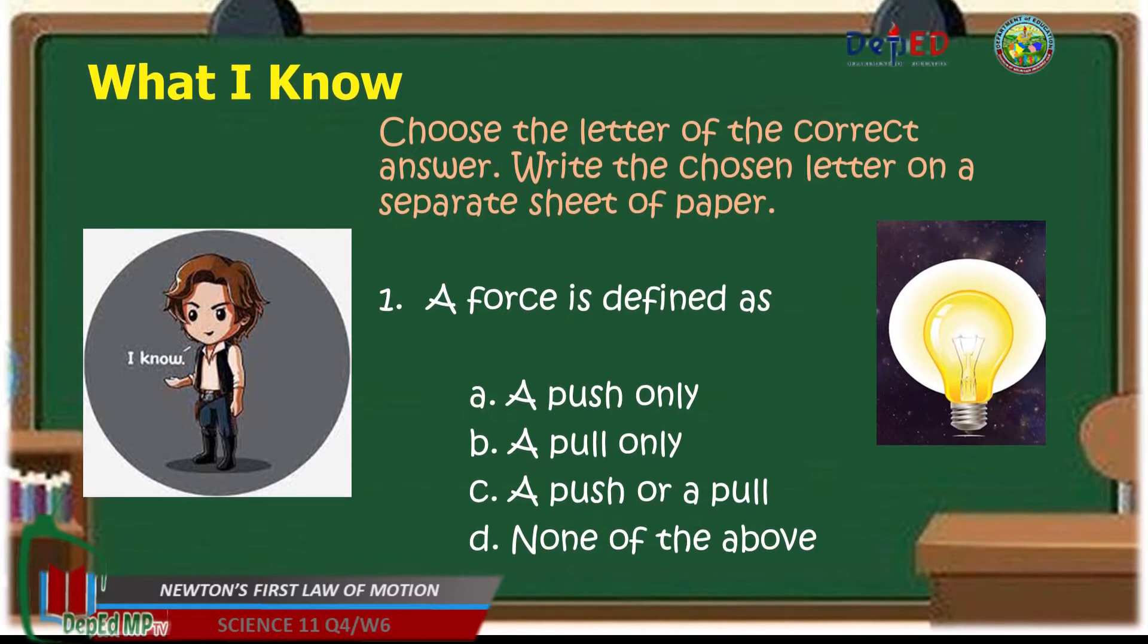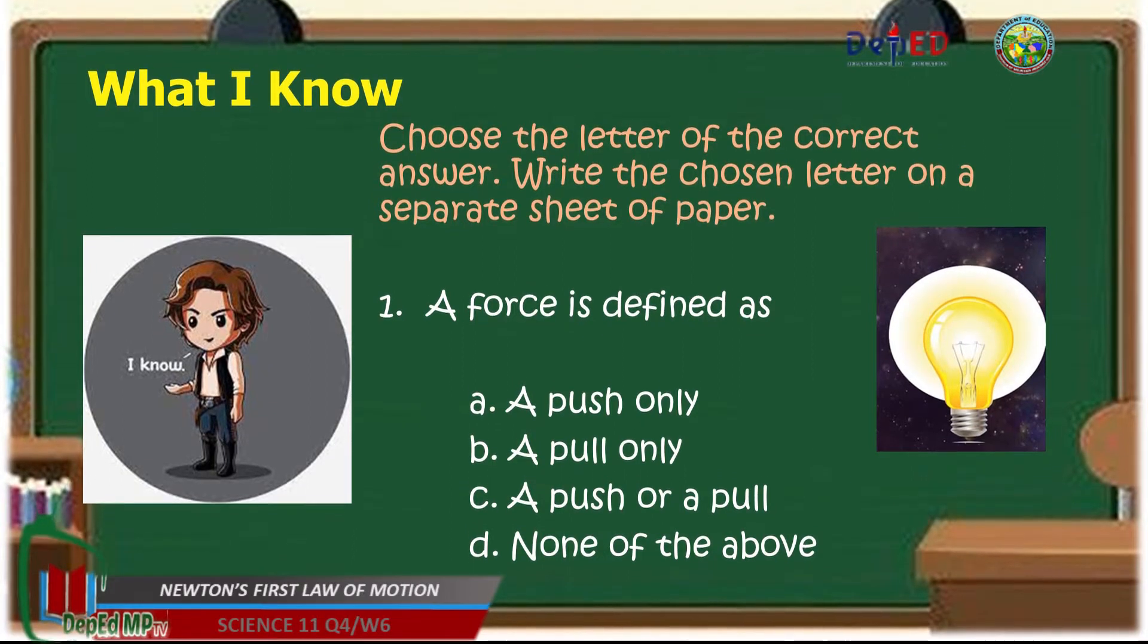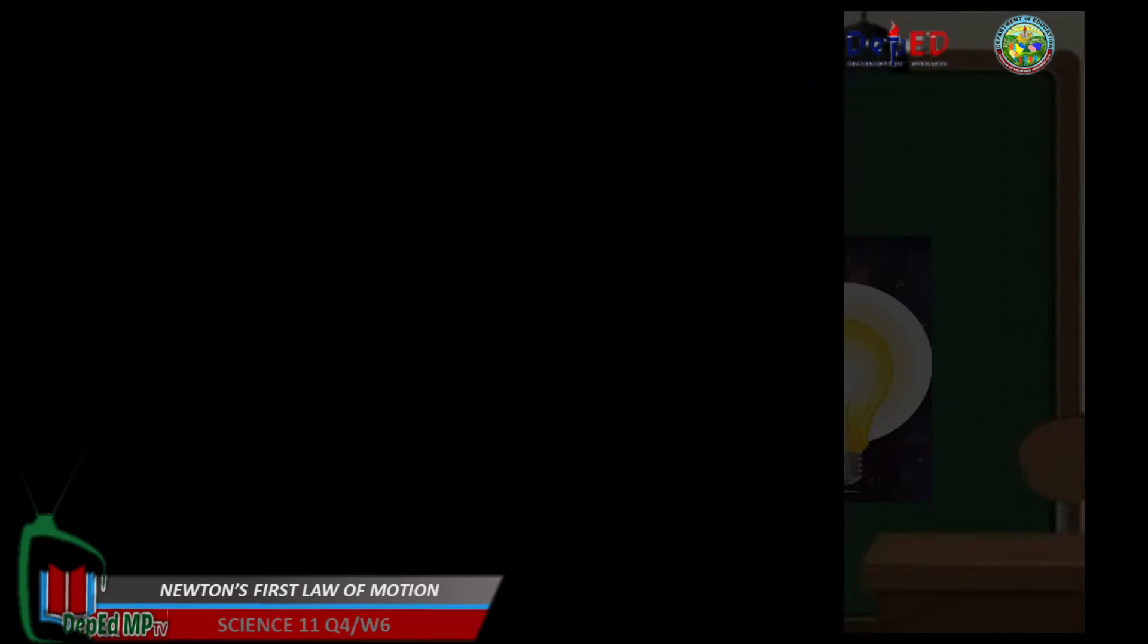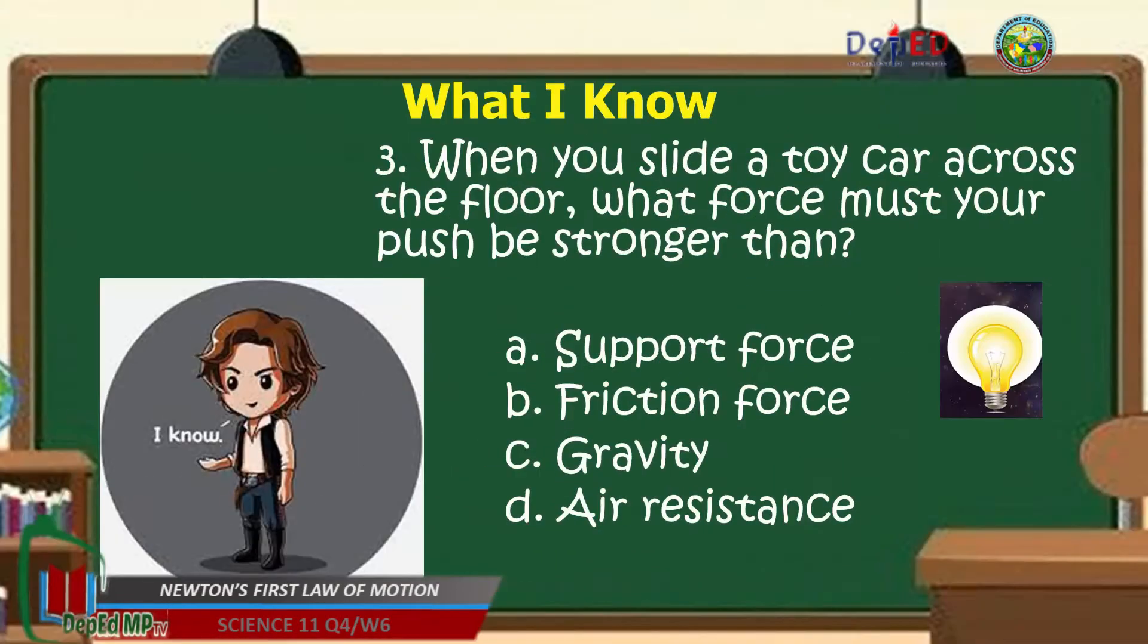Number 1. A force is defined as: A. A push only, B. A pull only, C. A push or a pull, D. None of the above. Number 2. What unit do scientists use to measure force? Letter A Newton, B. Grams, C. Meters, D. Meter per second. Number 3. When you slide a toy car across the floor, what force must your push be stronger than? Letter A Support force, Letter B Friction force, Letter C Gravity, And letter D Air resistance.